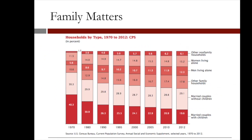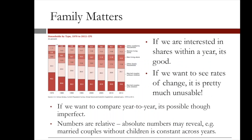The final visualization I want to show you today is all about the different types of household. The US Census Bureau periodically determines how many households are comprised, for example, of married couples with and without children, people living alone, and so on. I'm not saying this is a bad visualization — if we are interested in the relative share of each type of household in a particular year, it's actually pretty good. However, if what we are interested in is the rates of change across the years, this is next to useless.